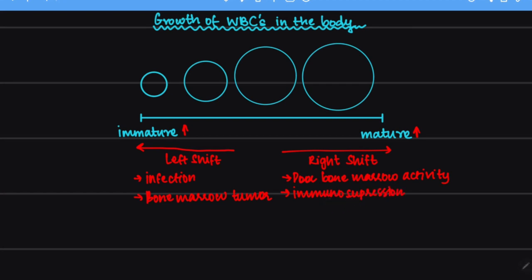In immunosuppression, there are less immature cells that are being formed. As a result of this, naturally, we have more mature cells in the body.